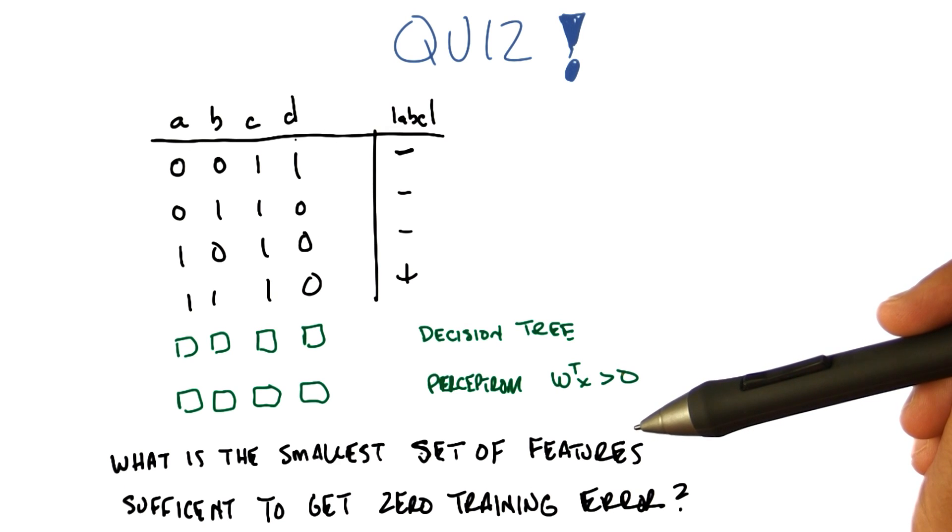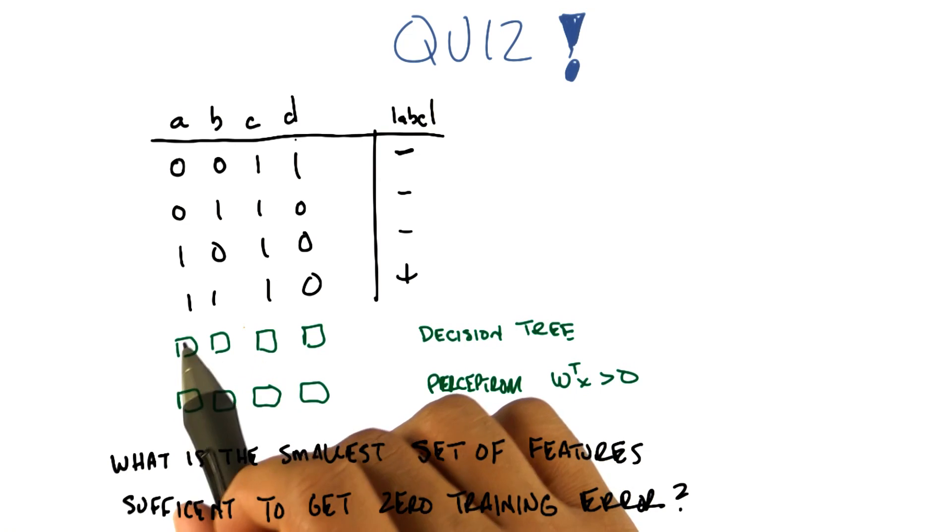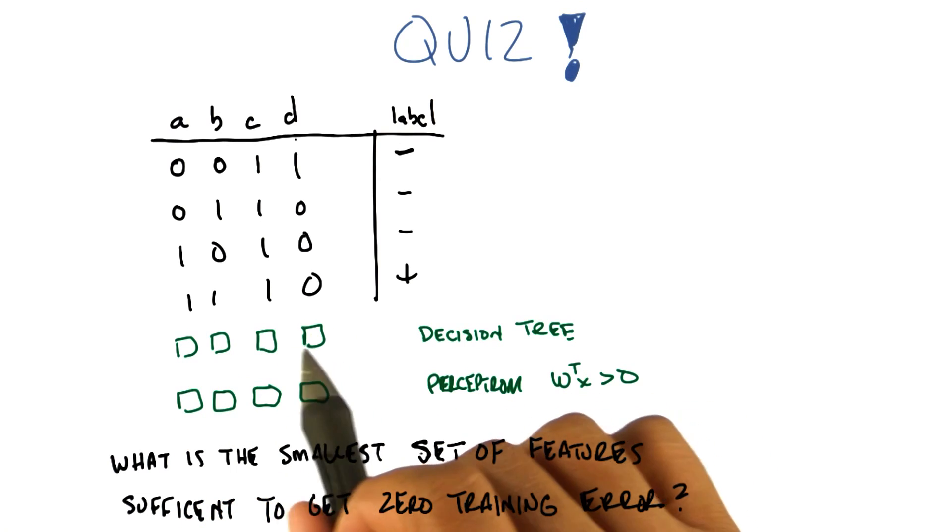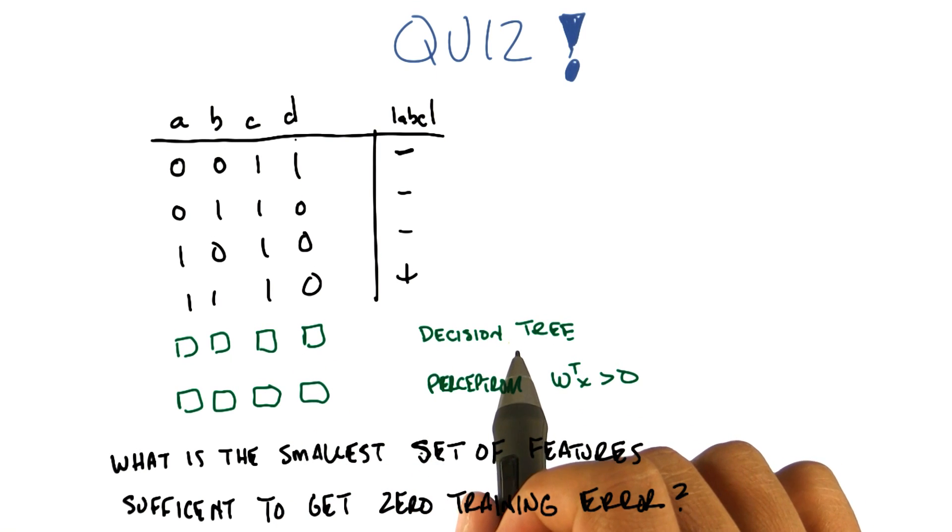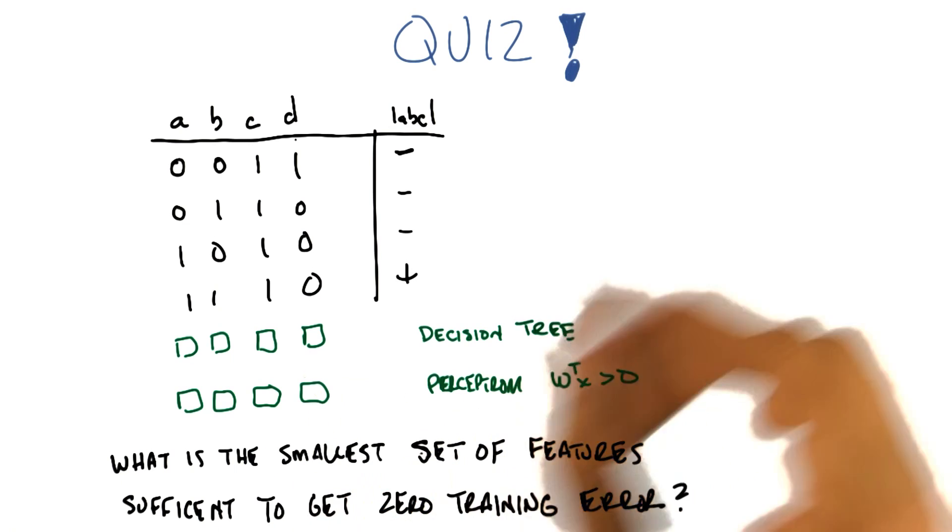Got it? I think so, yeah. Okay, and so what I have out here are a bunch of checkboxes. And I want you to check off the variables that you need, or the features that you need, in order to allow decision tree to get zero training error, or to allow the simple perceptron to get zero training error.